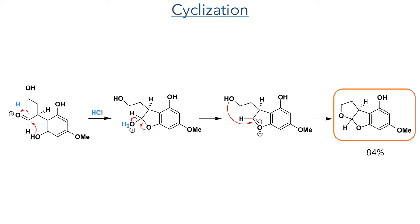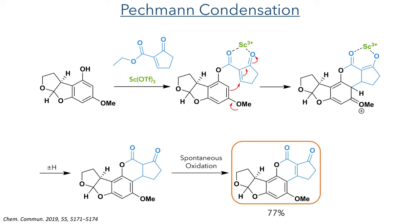The completion of this tricyclic intermediate brings to the end the formal synthesis of aflatoxin B2, as the synthesis can be completed using previously reported methods. One such method is the Peckham condensation reported by Wang and Zhu. This synthesis used the intermediate and reacted it with an enone ester together with a scandium triflate catalyst. This first undergoes a transesterification reaction, and the enone then takes part in an intramolecular electrophilic aromatic substitution reaction to form the D and E rings. This is reported to undergo a spontaneous oxidation during this reaction to form aflatoxin B2 in a 77% yield.